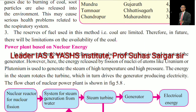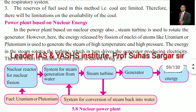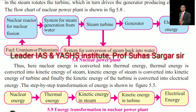Power plant based on nuclear energy: In a nuclear power plant, a steam turbine is also used to rotate the generator. However, here the energy released by fission of nuclei of atoms like uranium or plutonium is used to generate steam of high temperature and high pressure. The energy in the steam rotates the turbine, which in turn drives the generator, producing electricity. The flow chart of the nuclear power plant includes: nuclear reactor for nuclear fission → system for steam generation → steam turbine generator → electrical energy → system for conversion of steam back into water. Fuel: uranium or plutonium.